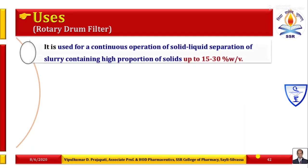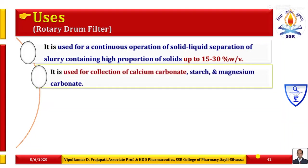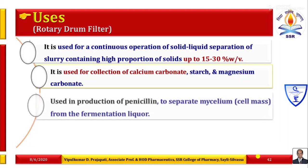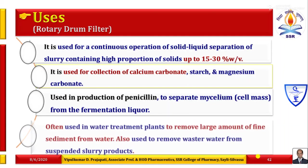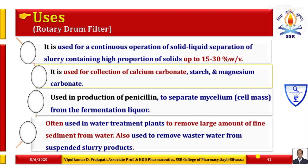Uses of rotary drum vacuum filter: It is used for continuous solid-liquid separation of slurries containing high proportion of solids (up to 15 to 30% w/v). It is used for collection of calcium carbonate, starch, and magnesium carbonate. It is also used in production of penicillin in the pharmaceutical industry to separate mycelium (cell mass) from fermentation liquor. It is often used in water treatment plants to remove fine sediment from water, and to remove wastewater from suspended slurry products.